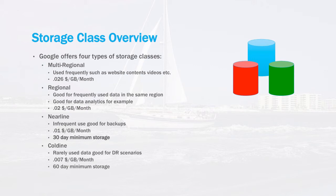Currently Google offers four storage classes: multi-regional, regional, nearline, and coldline. Going from top to bottom, they range from very high availability down to coldline, which is the lowest in availability and also the cheapest in cost. Multi-regional is the most expensive storage option, used for frequent data access scenarios such as a website serving up content or video, and it's priced at $0.026 per gigabyte per month.